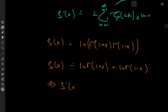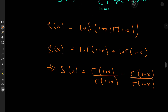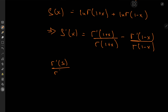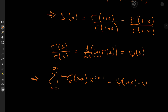So S′(x) equals Γ′(1+x)/Γ(1+x) minus Γ′(1−x)/Γ(1−x) by the chain rule (giving a negative sign on the second term). The logarithmic derivative of the gamma function is the digamma function ψ, so we arrive at another beautiful result: the sum over k from 1 to infinity of zeta(2k) · x^(2k−1) equals (1/2)[ψ(1+x) − ψ(1−x)], which looks absolutely gorgeous.